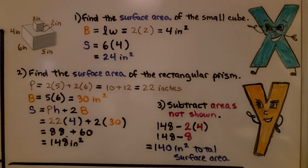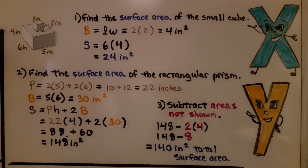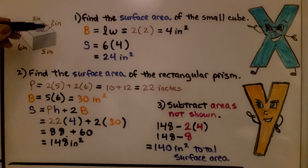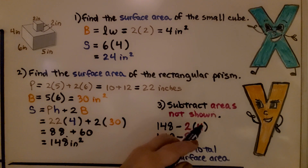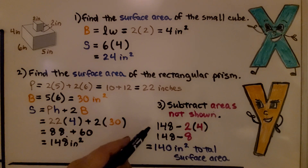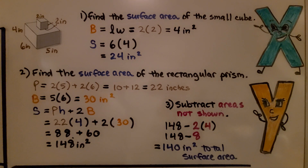Now we subtract the areas not shown. The bottom of the 2-inch cube is a 4 in² face, and there's a matching 4 in² area on the top of the rectangular prism where the cube sits. So we subtract 2 × 4 = 8 in²: 148 − 8 = 140 in² total surface area for this composite solid.